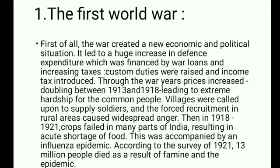In 1918 to 1921, crops failed in many parts of India, resulting in an acute shortage of food. This was accompanied by an influenza epidemic. According to the survey of 1921, 13 million people died as a result of famine and the epidemic.